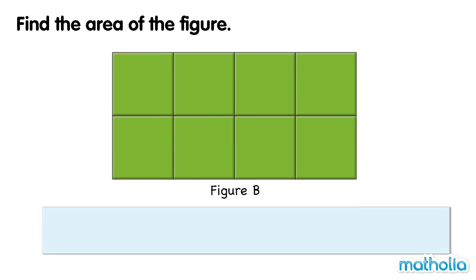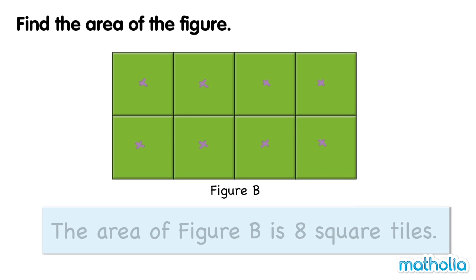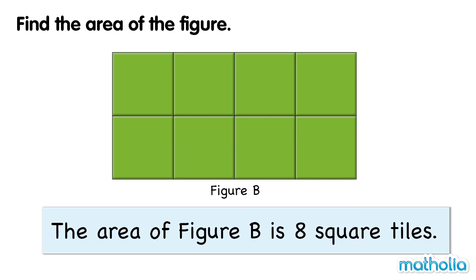Figure B is made of one, two, three, four, five, six, seven, eight square tiles. The area of figure B is eight square tiles.